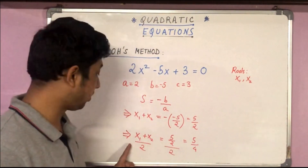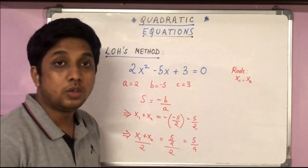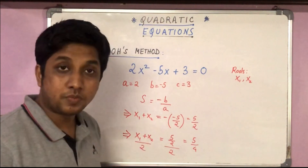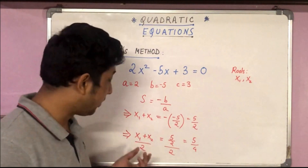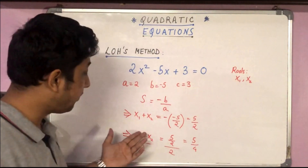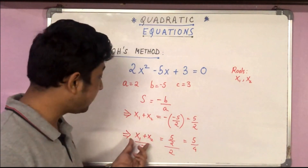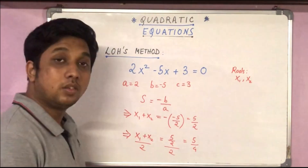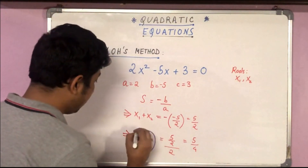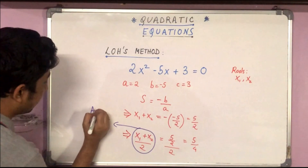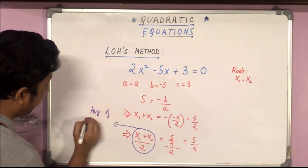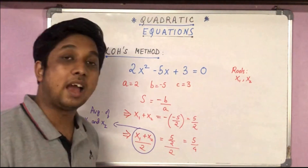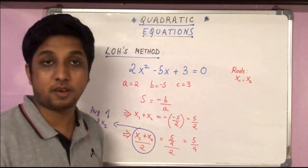Now, (x₁ + x₂)/2 is nothing but the average of x₁ and x₂ — the two roots of this quadratic equation. So the average of x₁ and x₂ is equal to 5/4.